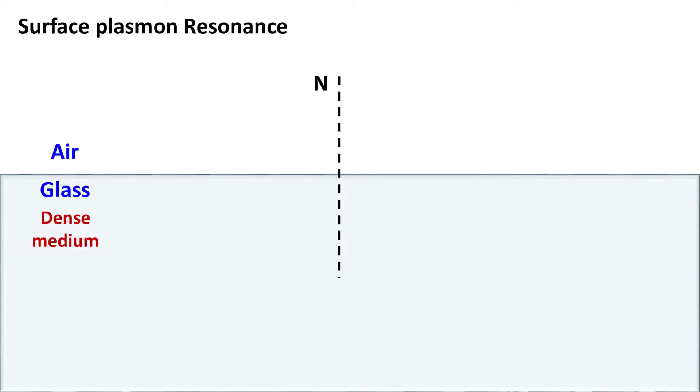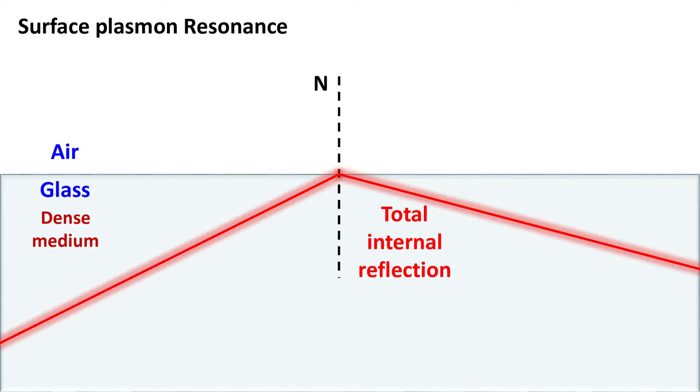When the light moves from a denser medium to a lighter medium, such as from glass to air, it moves away from normal. And at an angle greater than the critical angle, it undergoes total internal reflection.